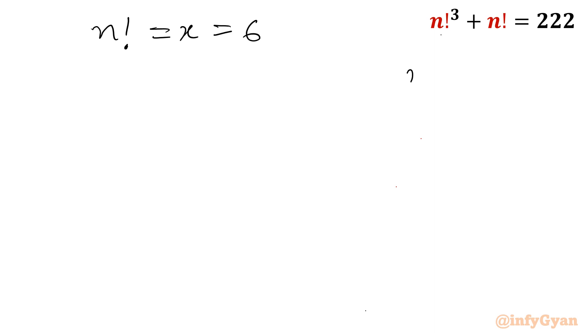n factorial is equal to x is equal to 6. So if we will see n factorial, we can check 2 factorial is 2, 3 factorial we know is 6. So 6 is done. n equal to 3. n equal to 3 is our solution. Now, let us verify this.